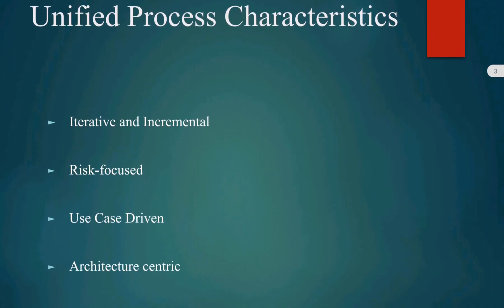What are the various characteristics of Unified Process Model? There are four important characteristics. The first characteristic is called iterative and incremental. In this lifecycle approach, the complete software development is organized into a series of short, fixed-length mini-projects, and that mini-project is called an iteration.